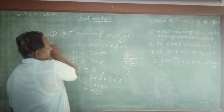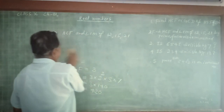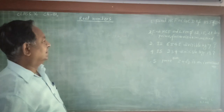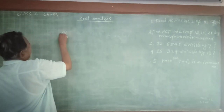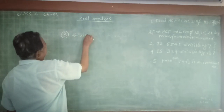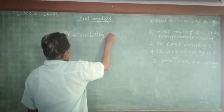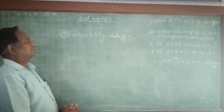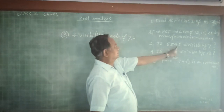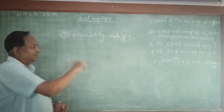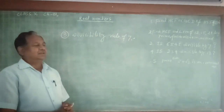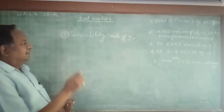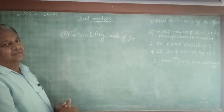Now let us see whether number 6545 is divisible by 7. The divisibility rule of 7 says: double the last digit and subtract from the remaining number. If the result is 0 or divisible by 7, then the given number will be divisible by 7.